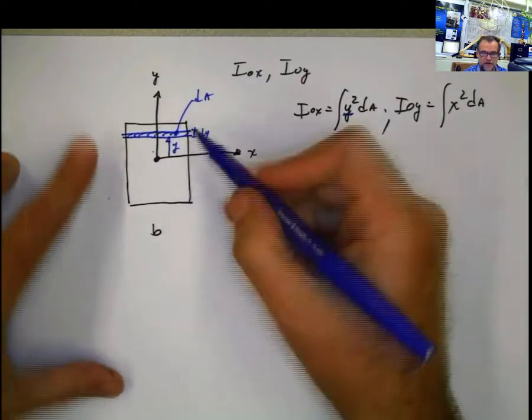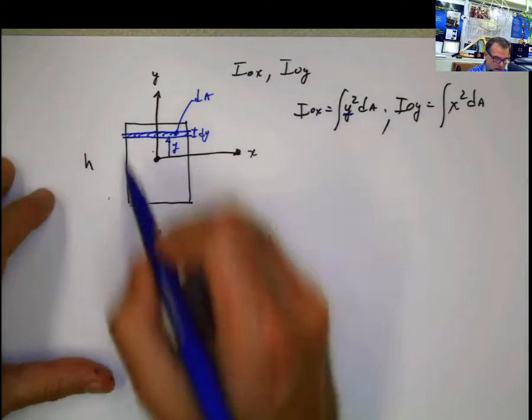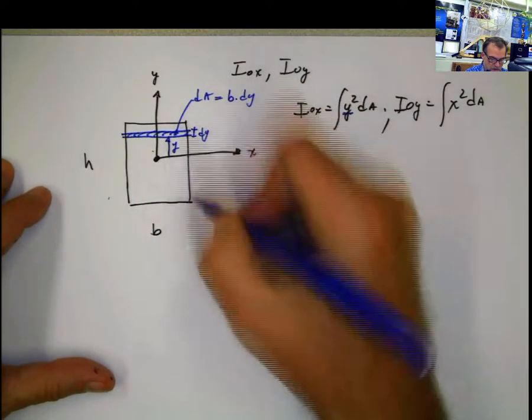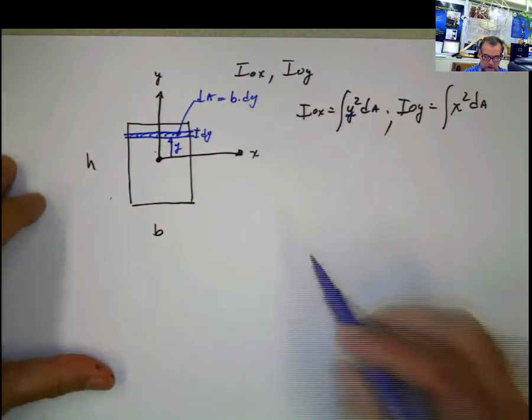And this is going to be my differential of area. In the case of a rectangle, it's really easy, because these two lines are parallel, and this distance is b. So my differential of area is going to be b times dy everywhere. b is constant everywhere dy.